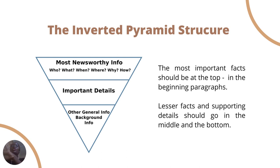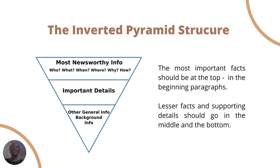If you lose readers in the middle, they've already received the most important information — the thing you want them to know. If you leave the most newsworthy information at the end and someone stops reading halfway, they've missed it. But if you start with the most newsworthy information, you catch their interest and they're more likely to read to the end. Think about what the most important information is and give that first, then feed other details in order of importance.